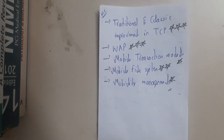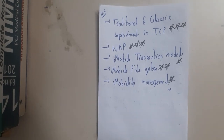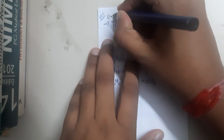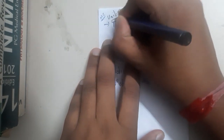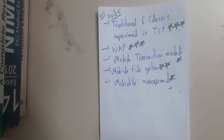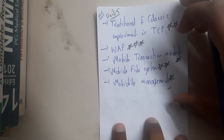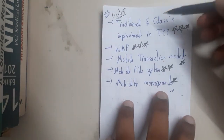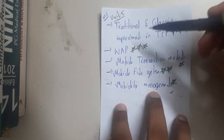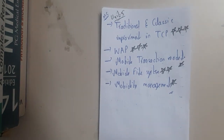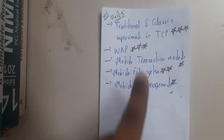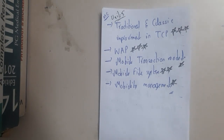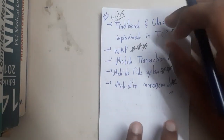Hello guys, we are back with our next lecture. This is the review video of Unit 5 of Mobile Computing. In this unit, the most important topics are traditional and classical improvements in TCP. There are a total of six — three in traditional and three in classical improvements. Please be thorough with them.